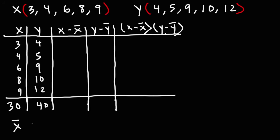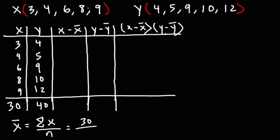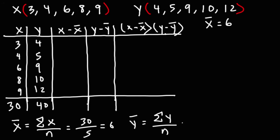The average x value is the sum of all x values divided by n. The sum is 30, and we have 5 numbers, so 30 divided by 5 gives x-bar equal to 6. The average y value is 40 divided by 5, which gives y-bar equal to 8.